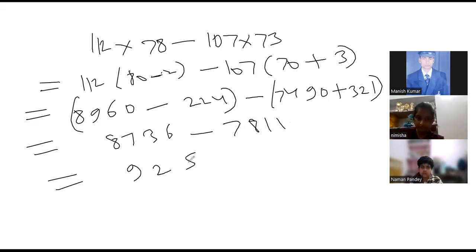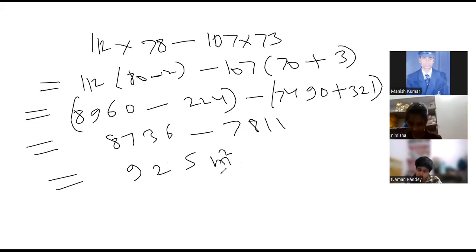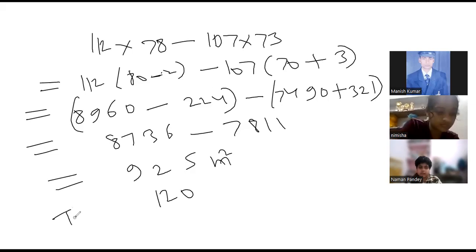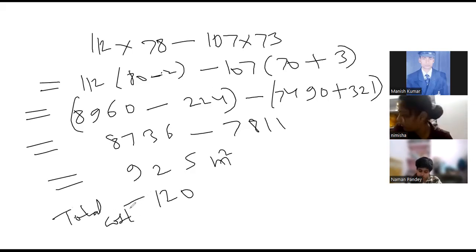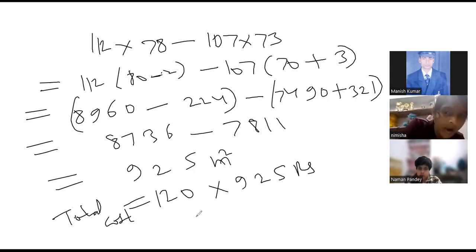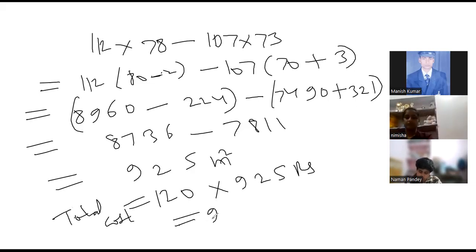6 minus 1 is 5, 3 minus 1 is 2, 7 — so the area is 925 meter square. Then we can find the cost: 925 into 120 per meter square. So the total cost will be equal to 120 into 925 rupees. What will it be? Tell me.